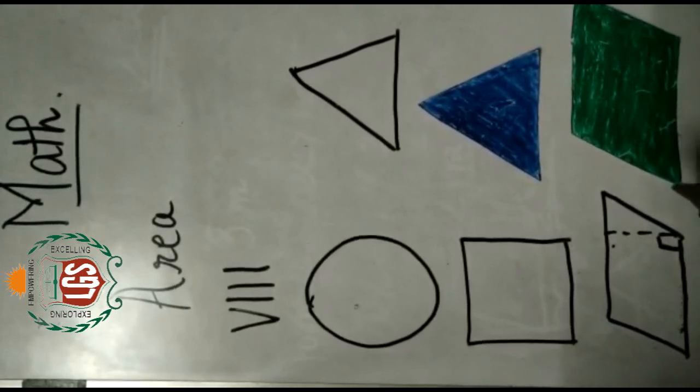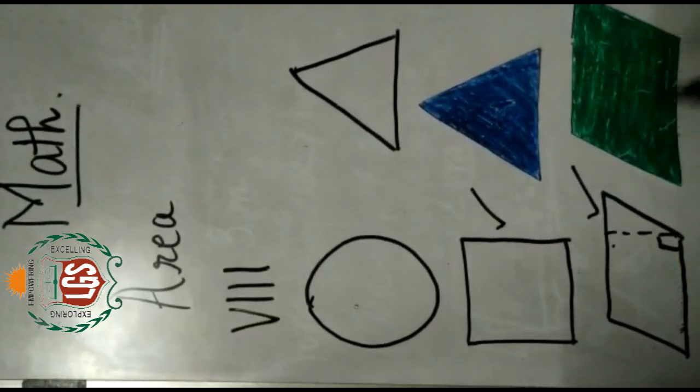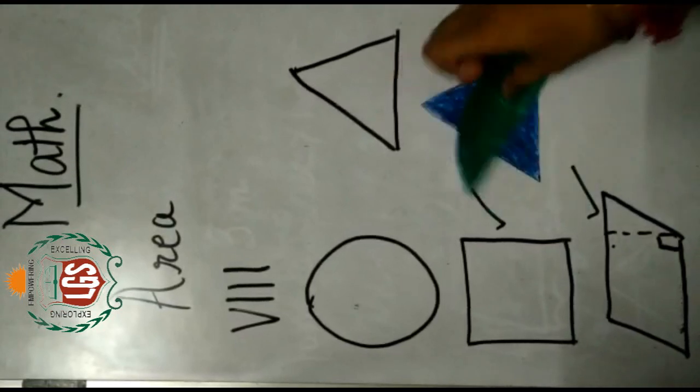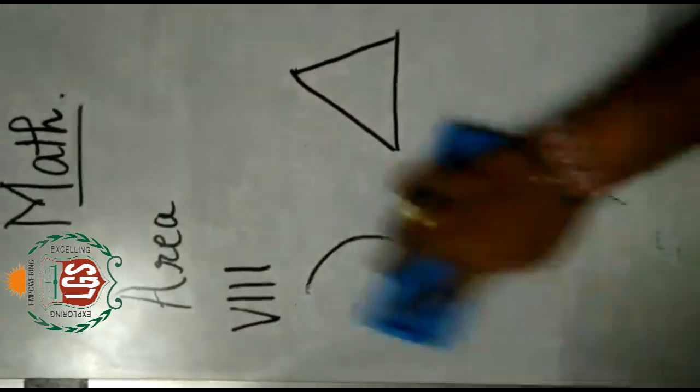So today we will be studying area specifically for two geometrical shapes. One is the square and another is the parallelogram. I will try to make you understand through some measurements. One more thing when we speak about measurements we need to remember that whatever answer we get, we need to put units after that. So units are very very important.